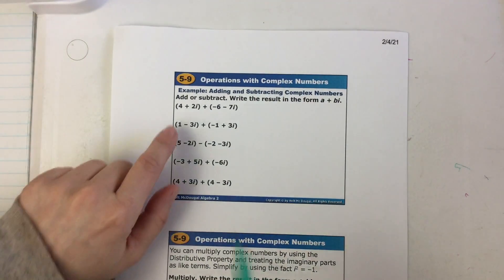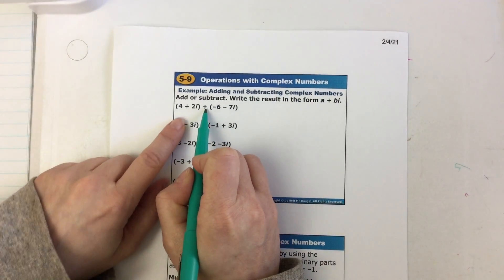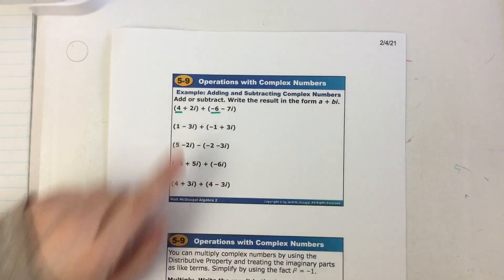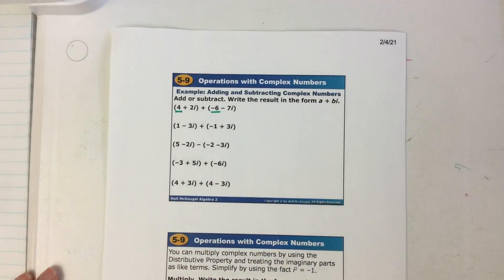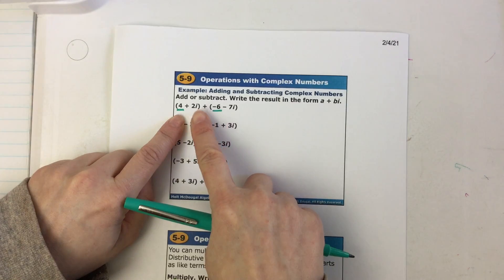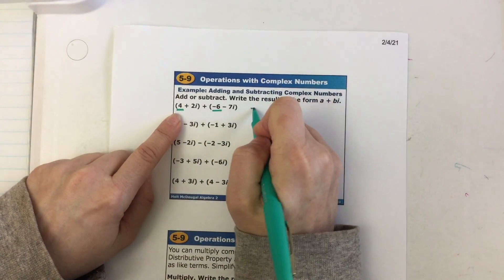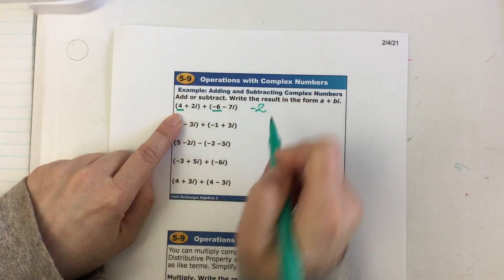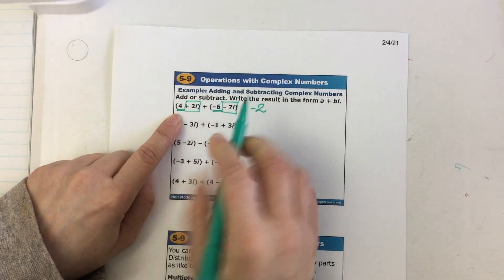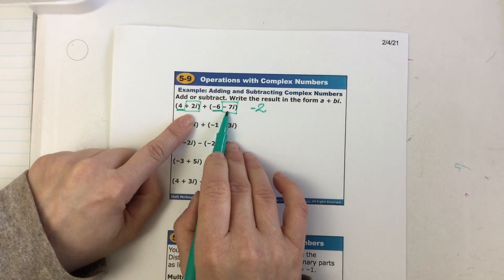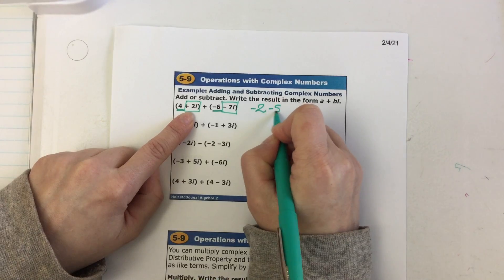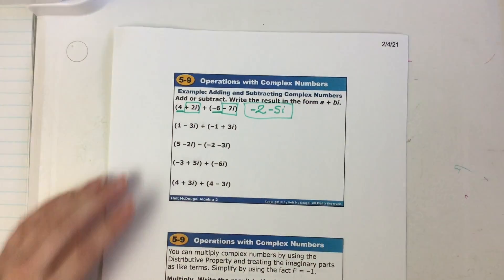If I am adding: the real number in this complex number is four; the real number in this complex number is negative six. You add them: four plus negative six is negative two. This is imaginary, this is imaginary — you add them: 2i plus negative 7i is negative 5i. Done, that's it.